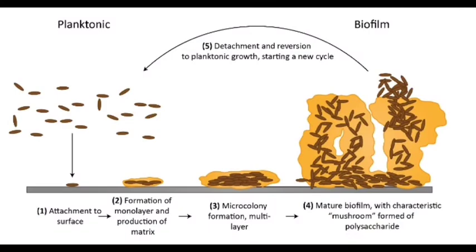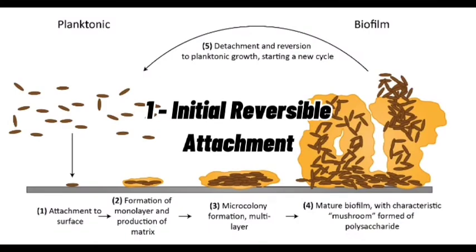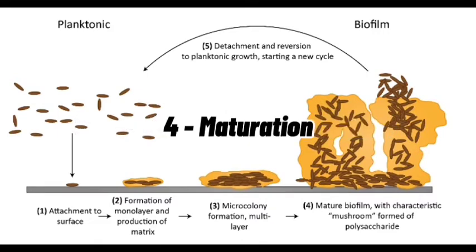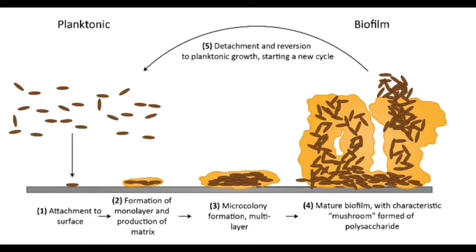Biofilm formation can be divided into five stages: initial reversible attachment, irreversible attachment, maturation, and dispersion, as shown in the figure. The initial contact of planktonic bacteria with a surface is still reversible. Bacteria then form a monolayer and produce an extracellular matrix or slime for protection. The matrix consists of extracellular polysaccharides, structural proteins, cell debris, and nucleic acids — the extracellular polymeric substances. Initial matrix formation is dominated by extracellular DNA, while polysaccharides and structural proteins take over later.